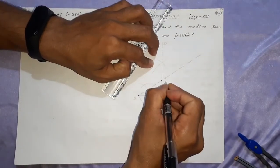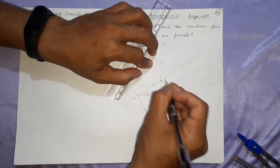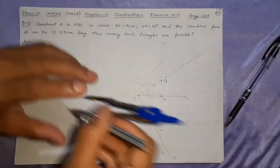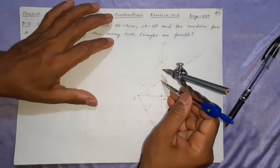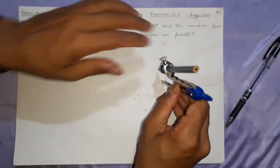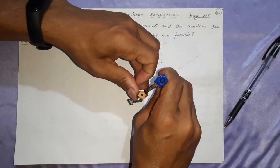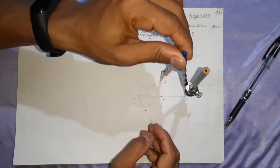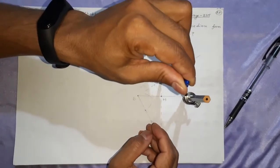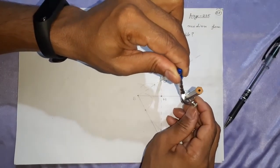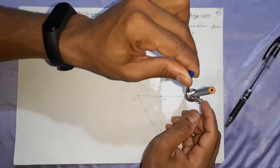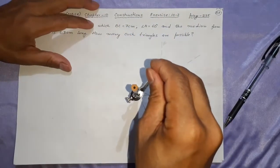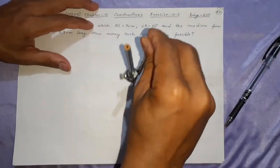Here will be your O. Once you find O, the next step is: from O you are going to take the radius OB or OC, whichever it is. Slightly bigger here — you make the circle.